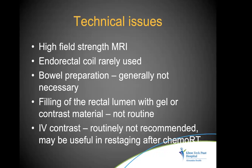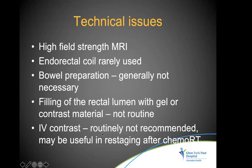Regarding technical requirements, MRI should be done at 1.5 Tesla or higher. Endorectal coil is rarely used, though it can better differentiate T1 and T2 tumors. Newer surface coils are quite good and provide all the necessary information. Bowel preparation is generally not needed. Spasmolytics are also not routinely necessary. Filling the rectal lumen with gel is not routine. Intravenous contrast is routinely not recommended per guidelines, though it may be useful in restaging after chemoradiotherapy.